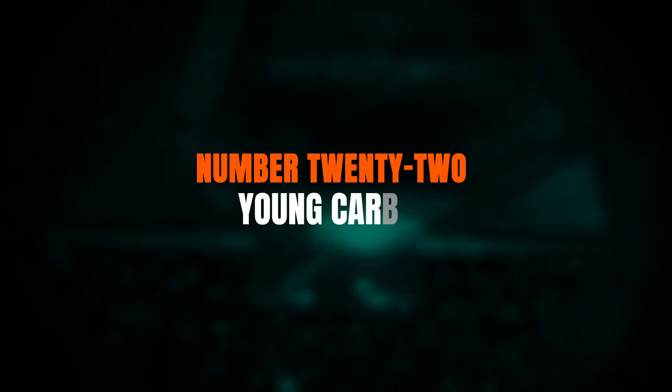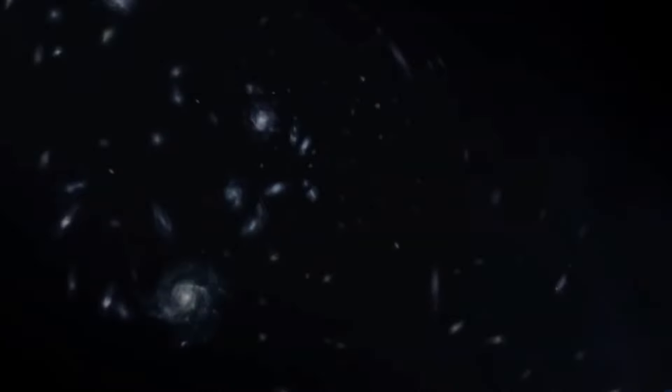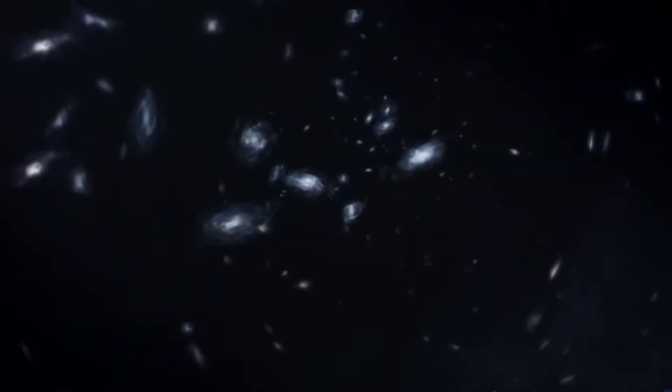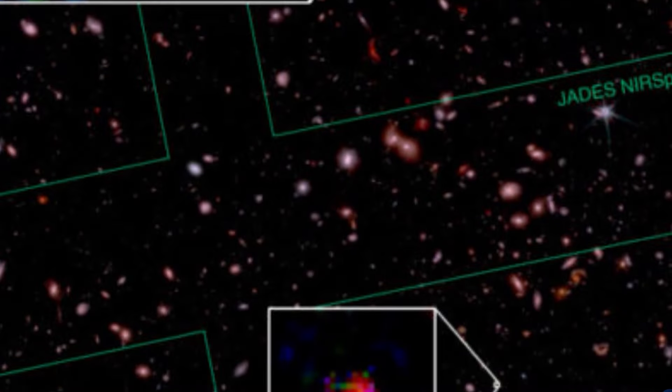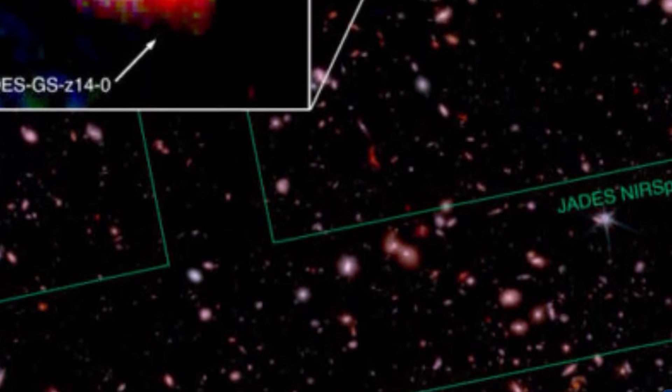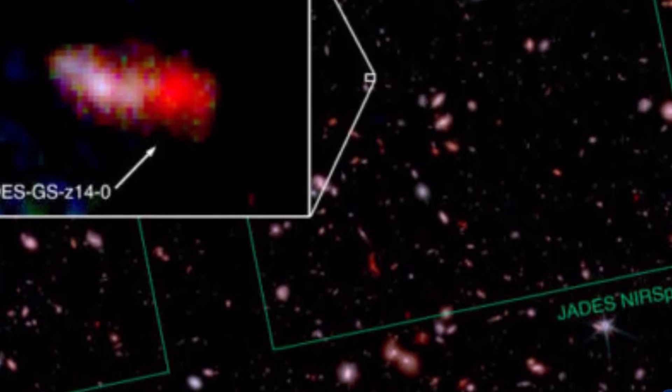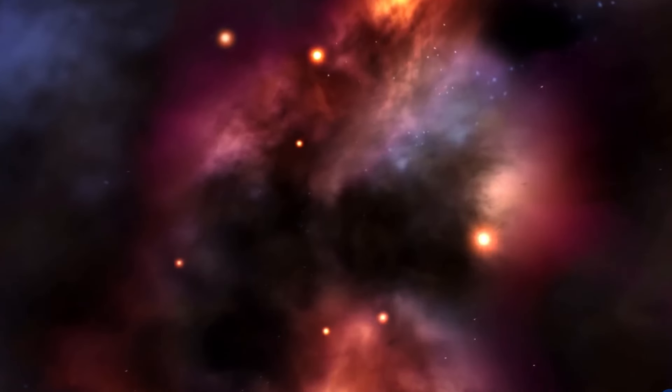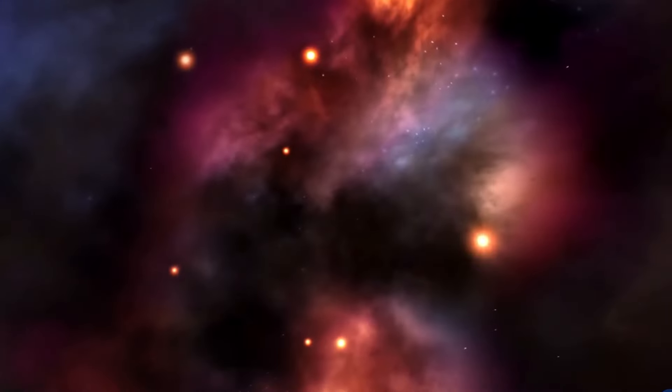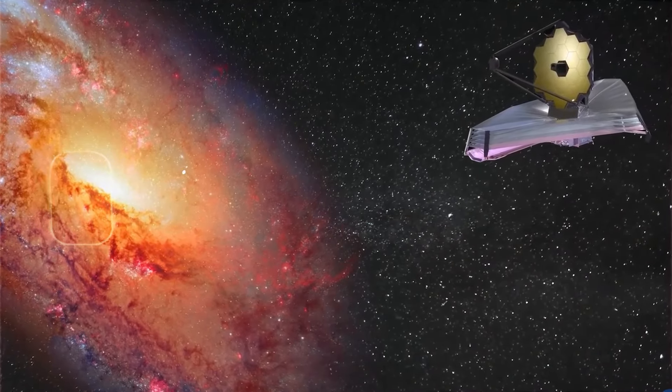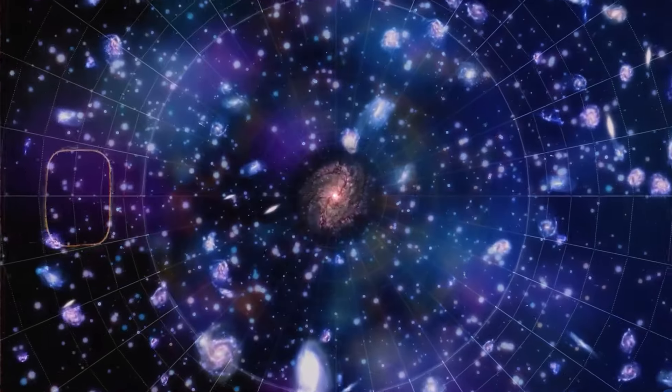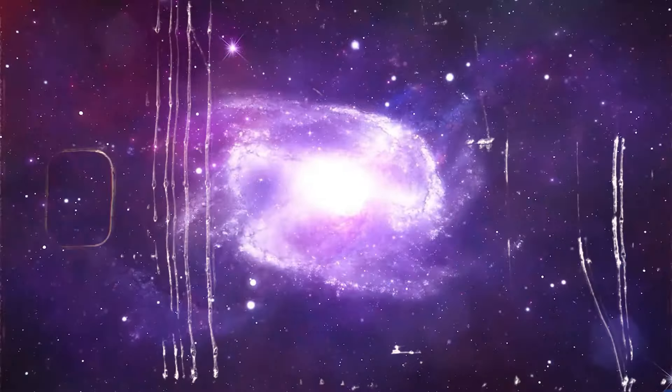Number 22. Young carbon. Another essential element for life is carbon. Its unique ability to form strong bonds with many other elements makes it the backbone of organic molecules, and the presence of carbon is critical for the development of complex life forms. Using the James Webb Space Telescope, astronomers have detected the presence of carbon in a surprising place. The extremely early universe.